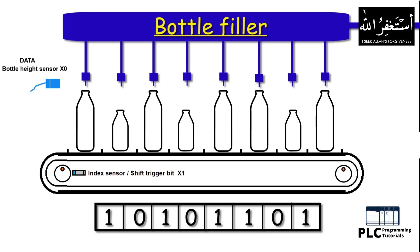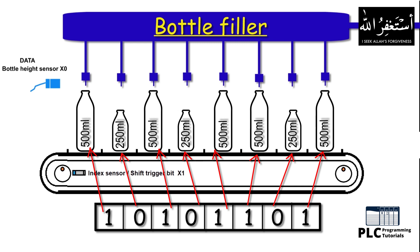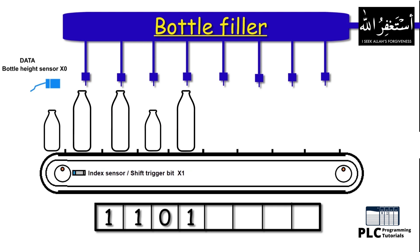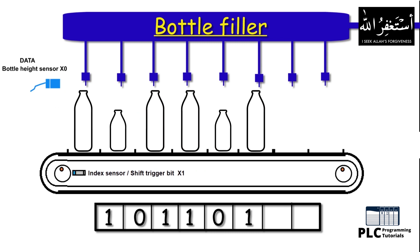In the end, we have eight bottles of mixed size in the filler, and we can track the location and size of the bottles under each filling nozzle using the data bits stored inside the shift register — zero for 250 ml and one for 500 ml. We can use these data bits to control the filling time of each nozzle, controlling how much volume we need to fill in each bottle. This way we can fill 500 ml in the big bottle and 250 ml in the small bottle. This is a basic example to show how a shift register works and how we can use it to make programming easier.